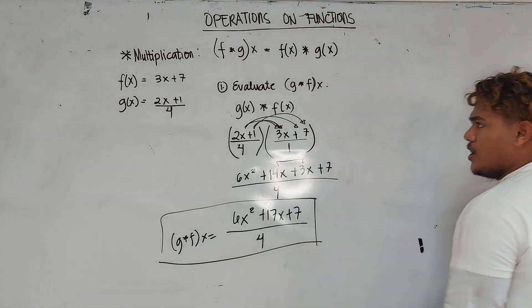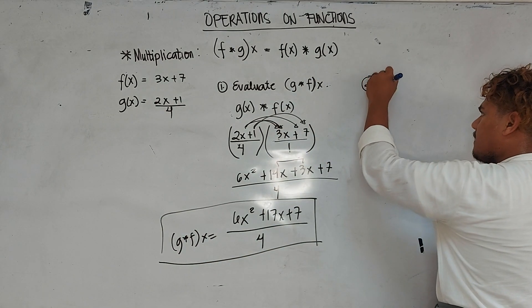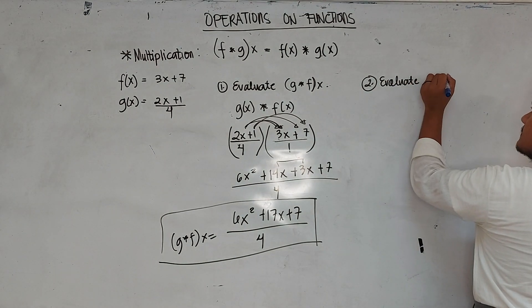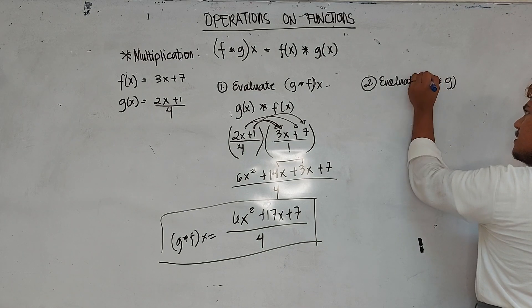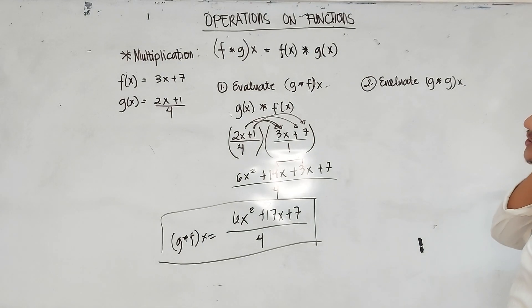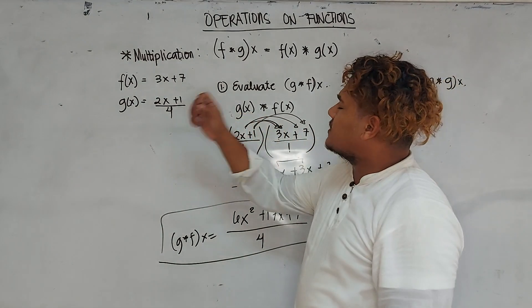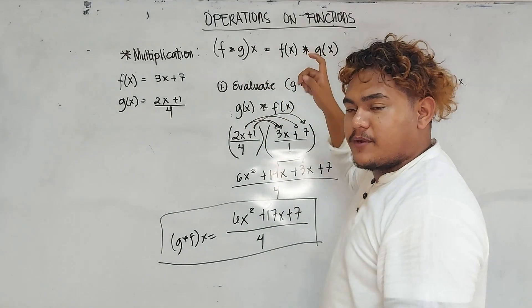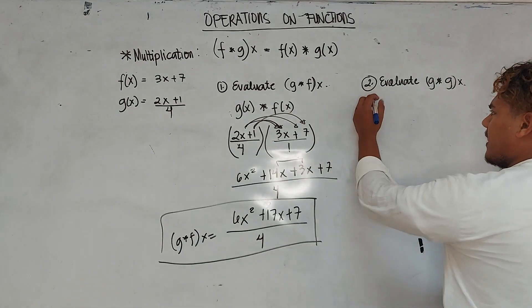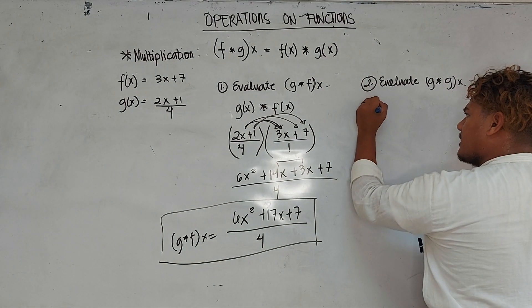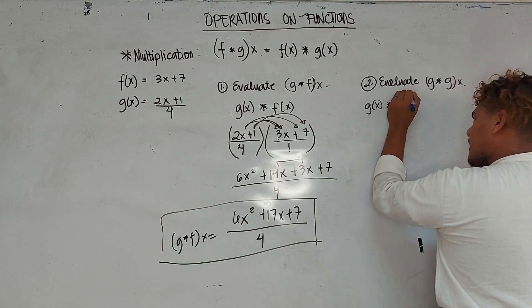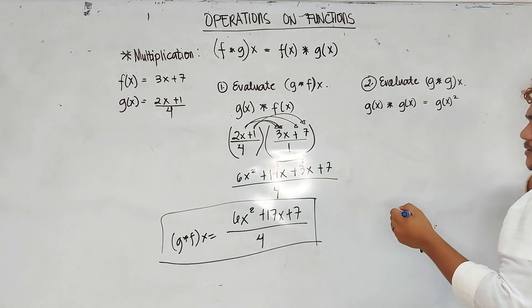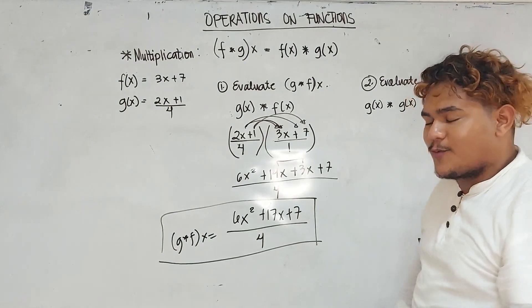That is for example number 1. How about example number 2? Evaluate g times g of x. The same concept applies: f times g of x is just equal to f of x times g of x. So what will happen here with g times g of x? That is equal to g of x times g of x, or g of x squared, because 1 times 1 is 1 and 1 squared is 1.